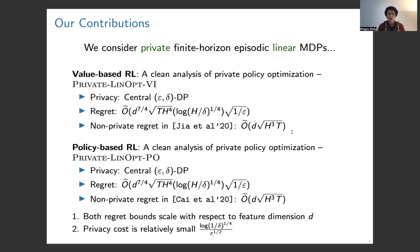We further consider policy-based algorithms. We derive an algorithm called PRIVATE-LINOPT-PO policy optimization, which can get the same regret bound. From the results, we can see both regret bounds scale only with respect to the feature dimension d, rather than the number of states and number of actions. Because of this, it can handle large-scale reinforcement learning, and also the privacy cost is relatively small.